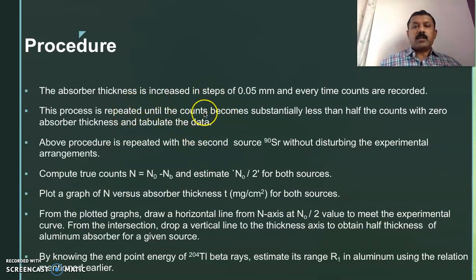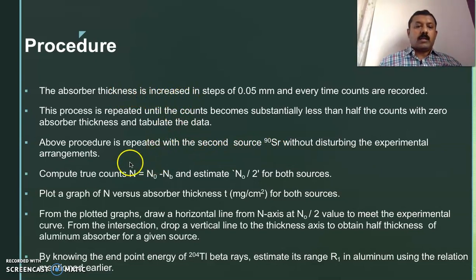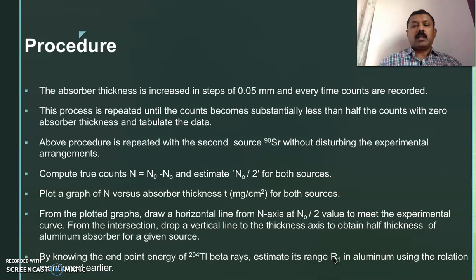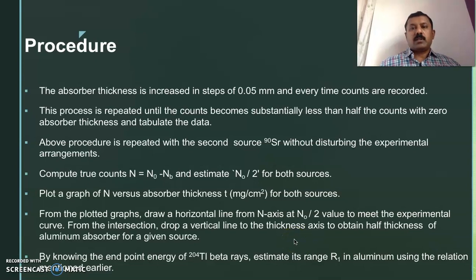Then repeat the procedure for Strontium — place the Strontium source in the source holder and place the absorbers one after the other and record the counts. The true counts equal the observed value minus the background count (N₀ − Nb). Estimate N₀/2 from the graph. Once you know the endpoint energy of beta particles from Thallium, calculate the range from the equation, then calculate the range of beta particles in Strontium, and from that range calculate the endpoint energy as described.